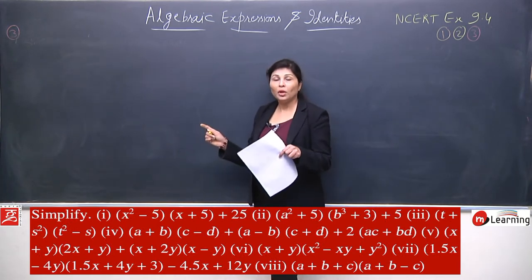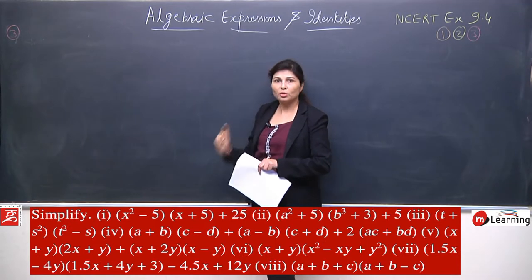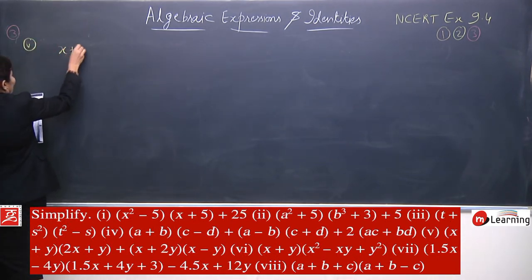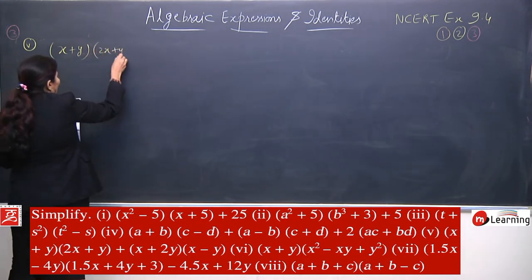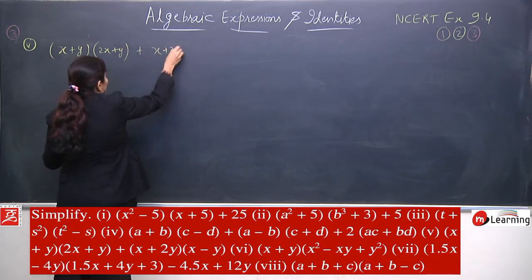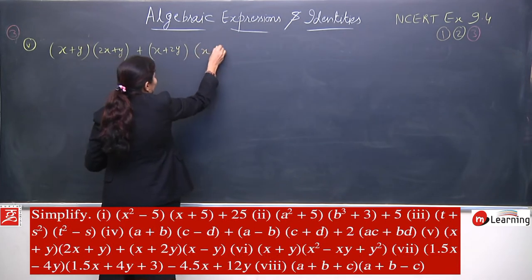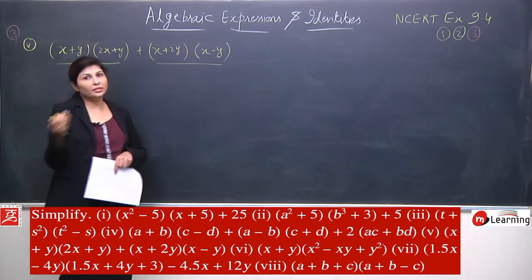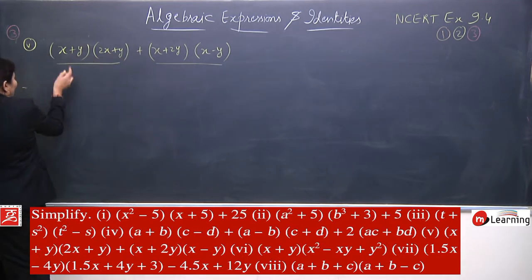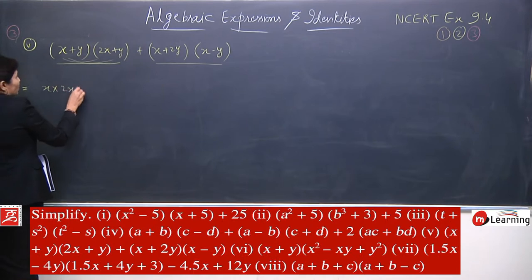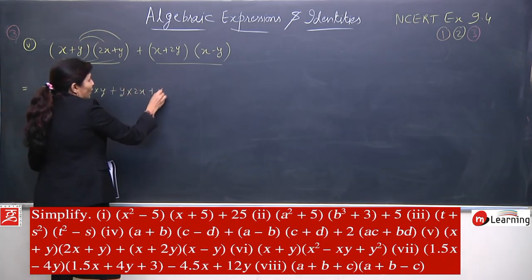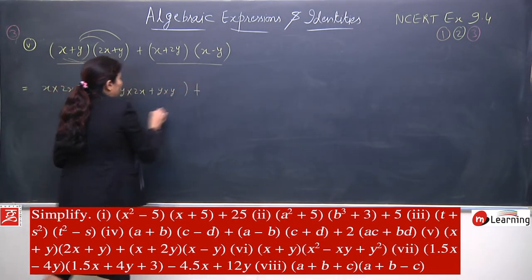So guys, we just solved the 4th part using the parts method. You could have also solved it directly. For the 5th part, instead of parts we will solve directly, so you get clarity on both methods. The 5th part is: (x+y)(2x+y) plus (x+2y)(x-y). x multiplied by both terms: x into 2x plus x into y. Similarly y multiplied by both terms: y into 2x plus y into y. This is your complete first part.